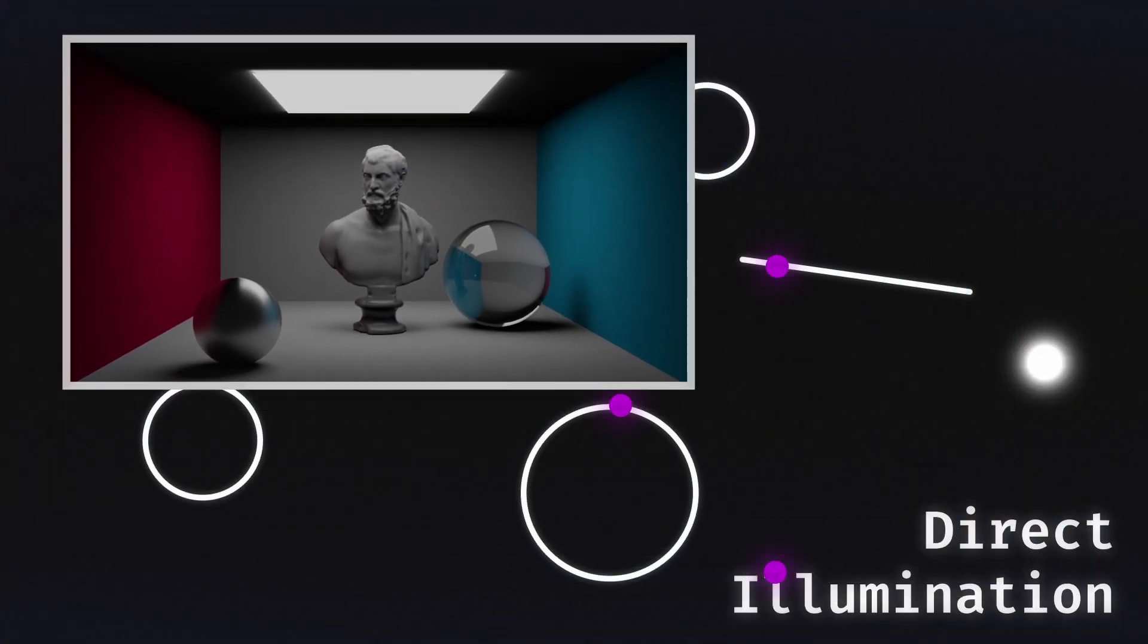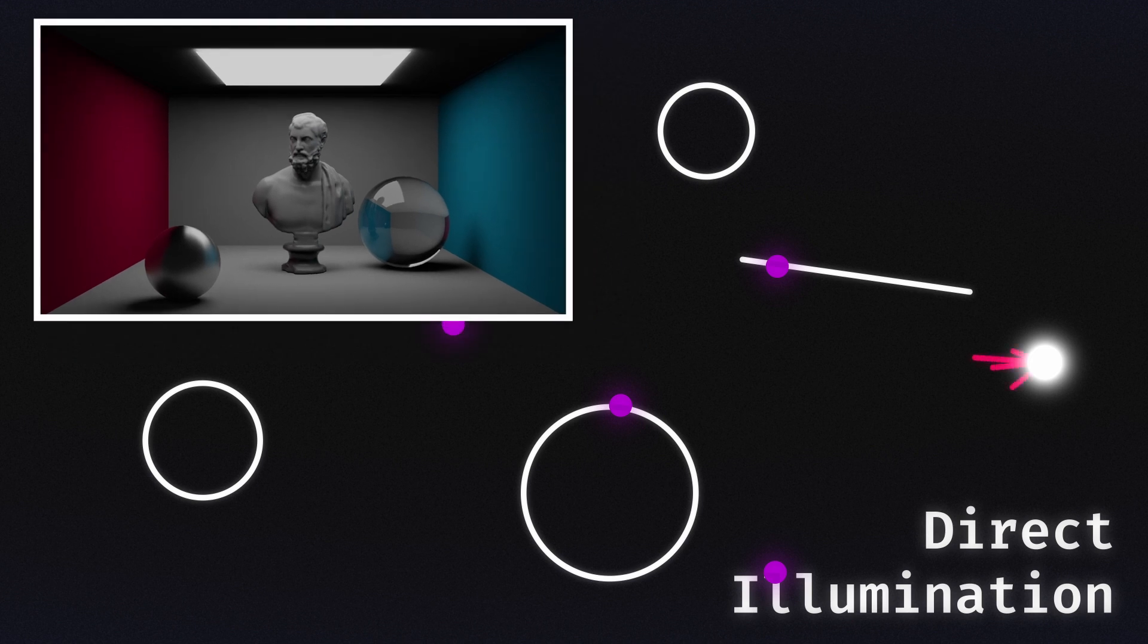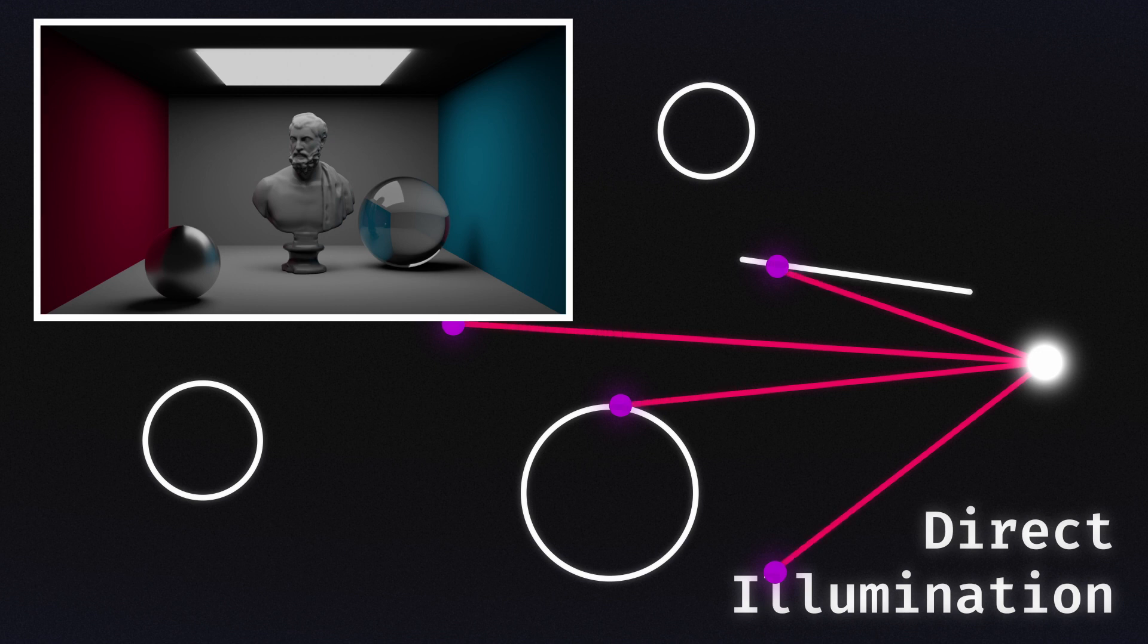The first type of lighting is direct illumination. Direct illumination considers only the light that has travelled directly from a light source to the point being considered. This gives some basic illumination and is where most other rendering methods stop with lighting.